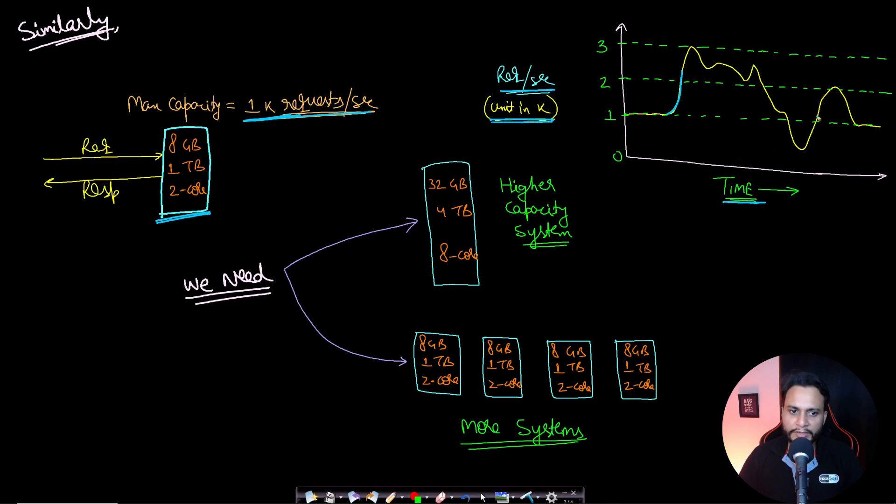Depending on our need, if you know that the maximum capacity of our system is 1000 requests per second, when the request rise above 1000 then this system will not be able to serve this request. The request will be dropped off and the quality of service will decrease.